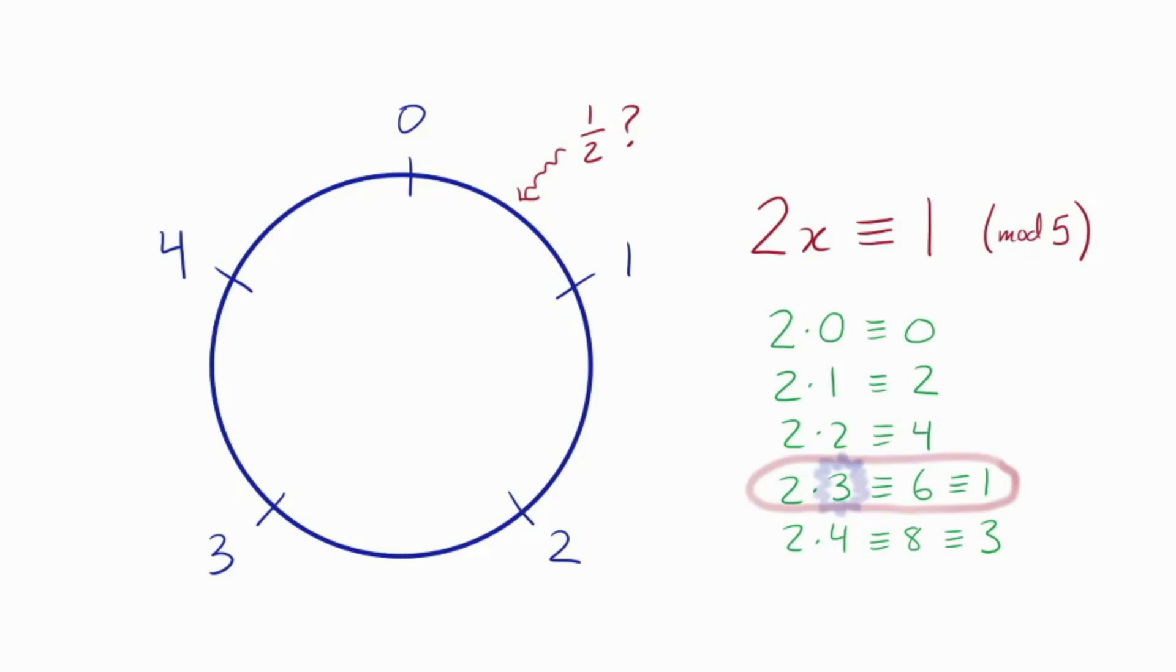Two times three is one mod five. Okay, so that does it. The proper notion of a half mod five is just three. In fact, it actually is halfway between zero and one on the clock. Take a look at that. Anyway, we have a special name for this. It's called the multiplicative inverse.